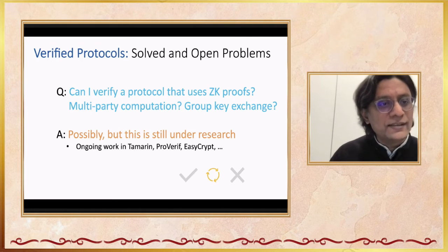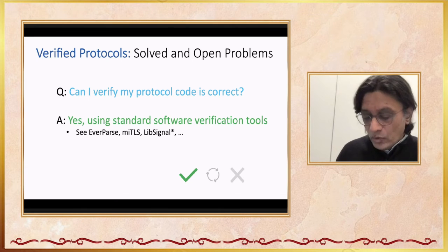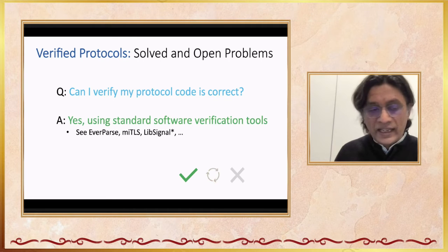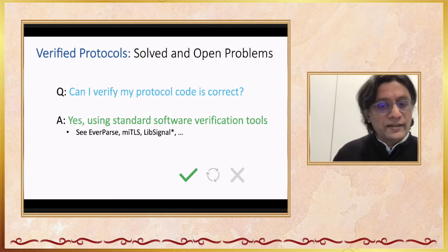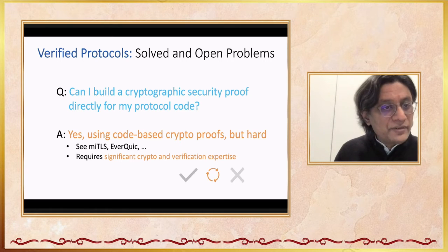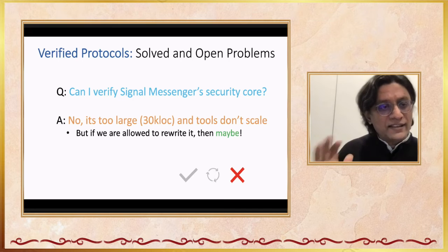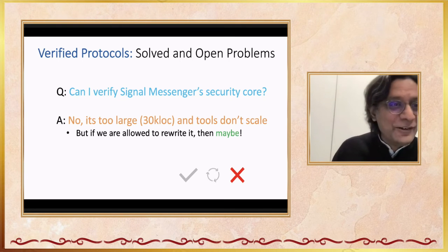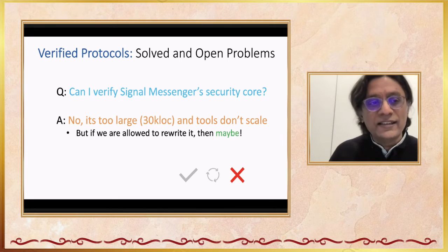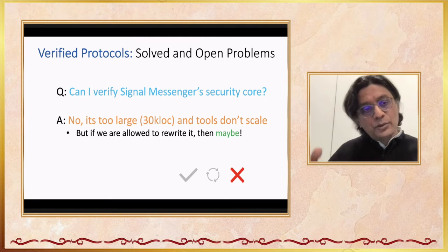What about really new kinds of things like zero-knowledge proof systems, multi-party computation, or group key exchange? Proving them secure using machine-checked proofs is possible, but this is a hot and active area of research. Can you prove that your code is correct — that it's actually doing what it's supposed to? Yes, there is now a whole bunch of software verification tools for Rust, C, F*, and Haskell. Can you build a crypto proof directly for code? Yes, there are research projects that have tried to do this. It's a lot of work, but it is possible. However, verifying the full 30,000-line security-critical portion of Signal is not going to scale to any of the tools I've mentioned.